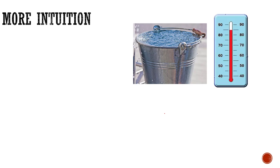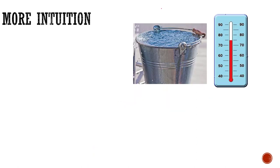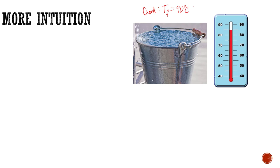Let's compare the situation when an object starts at a different temperature. Let's say we had a bucket of water and we wanted to get it to a final temperature Tf of 90 degrees Celsius. We'll note that Celsius and Kelvin have the same unit division, so we can use them interchangeably for these equations. Let's say the bucket starts at 80 degrees Celsius — we feed it five units of energy and it raises to 90 degrees Celsius.